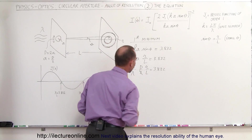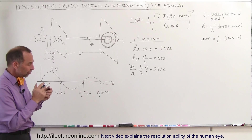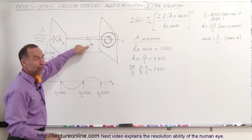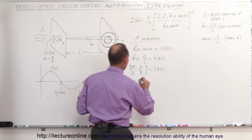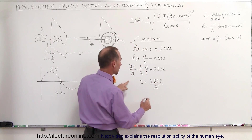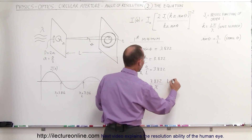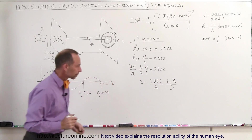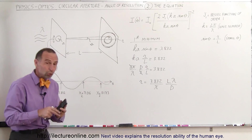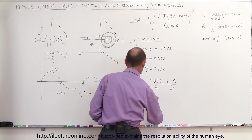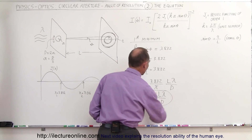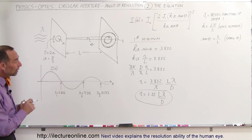Solving for R, the distance to the first minimum: R = (3.832/π)·(Lλ/D). Computing 3.832 divided by π gives 1.22. So R = 1.22·Lλ/D. This expresses the radius of the first minimum of the diffraction pattern on the screen.